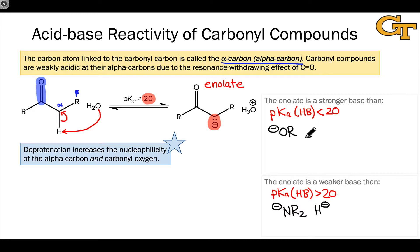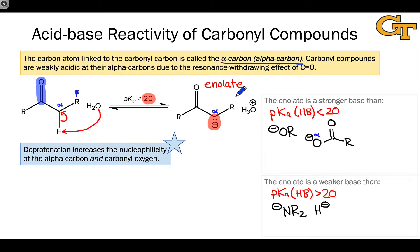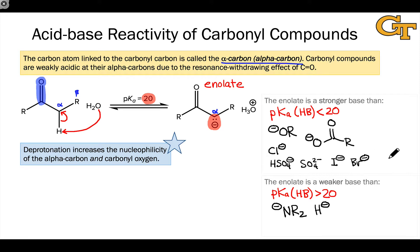The enolate is a stronger base than a carboxylate. A carboxylate is kind of the oxygen analog of an enolate: in the enolate we have negative charge on a carbon alpha to the carbonyl group, while the anionic oxygen in a carboxylate is like an alpha oxygen with respect to the carbonyl carbon. So unsurprisingly, replacing O⁻ with C⁻ generates a stronger base — the enolate is stronger than a carboxylate. The enolate is also a stronger base than the conjugate base of any strong acid: Cl⁻, HSO₄⁻, SO₄²⁻, I⁻, and Br⁻ are all much weaker bases than the enolate.